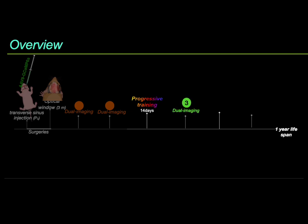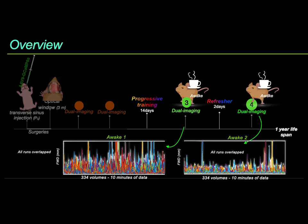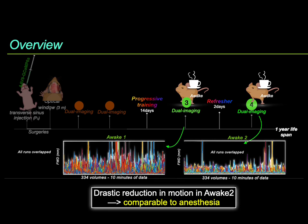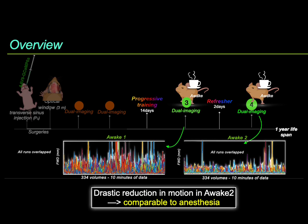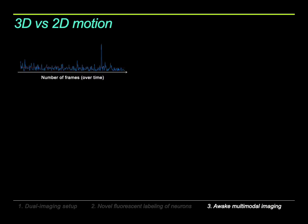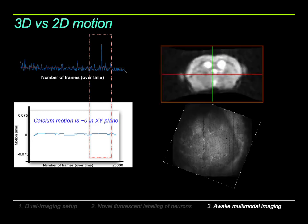The first awake imaging session showed a considerable increase in motion compared to anesthetized sessions. However, after the refresher training, we witnessed a drastic reduction in motion compared to the first awake session — down to approximately the anesthesia level, with around nine to ten percent of data to be discarded. Notably, comparing motion in the 3D fMRI data versus the 2D calcium imaging data, a large motion spike visible in the fMRI data completely disappears in the calcium imaging data, suggesting the motion is mostly accounted for in the z-axis.